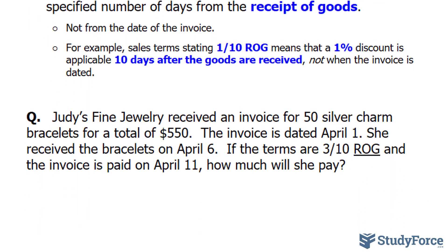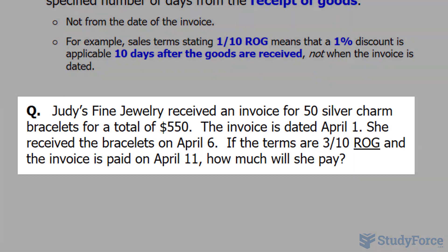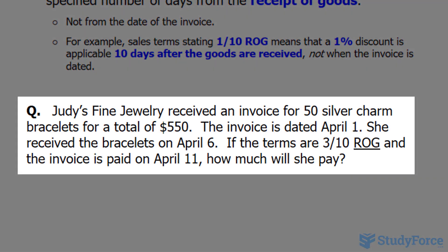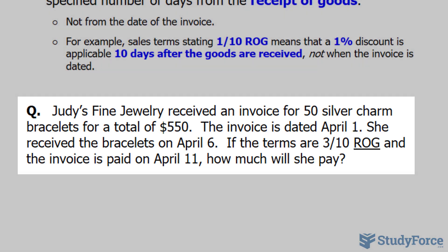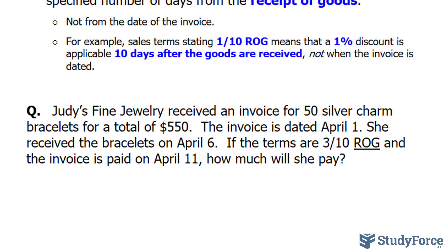So let's try an example. Judy's Fine Jewelry received an invoice of 50 silver charm bracelets for a total of $550. The invoice is dated April 1st. She received the bracelets on April 6th — notice the difference, that's five days. If the terms are 3-10 ROG and the invoice is paid on April 11th, how much will she pay?